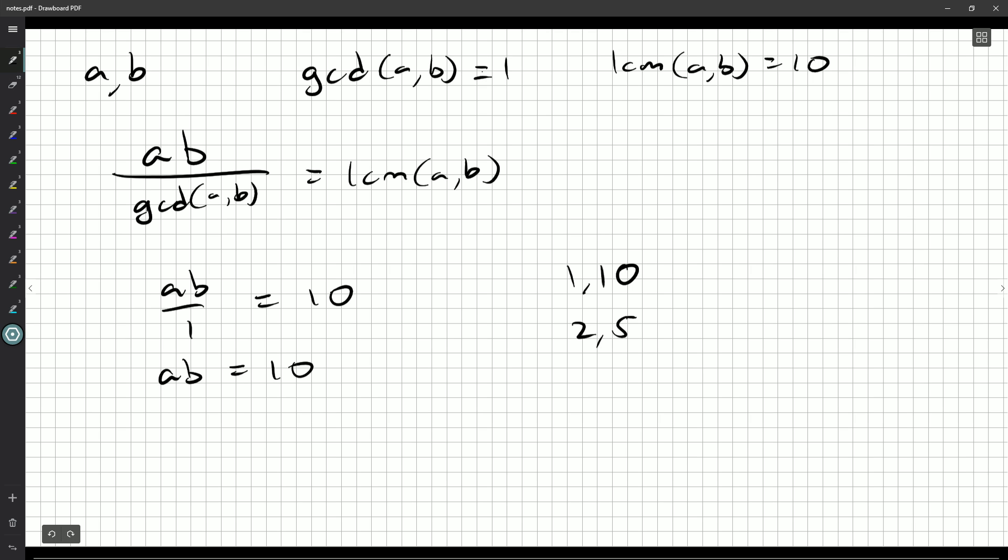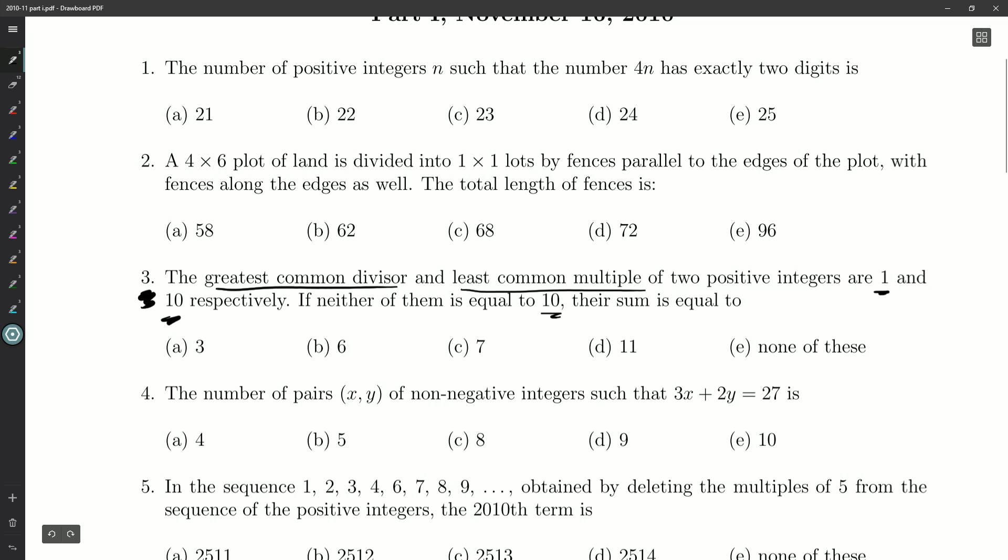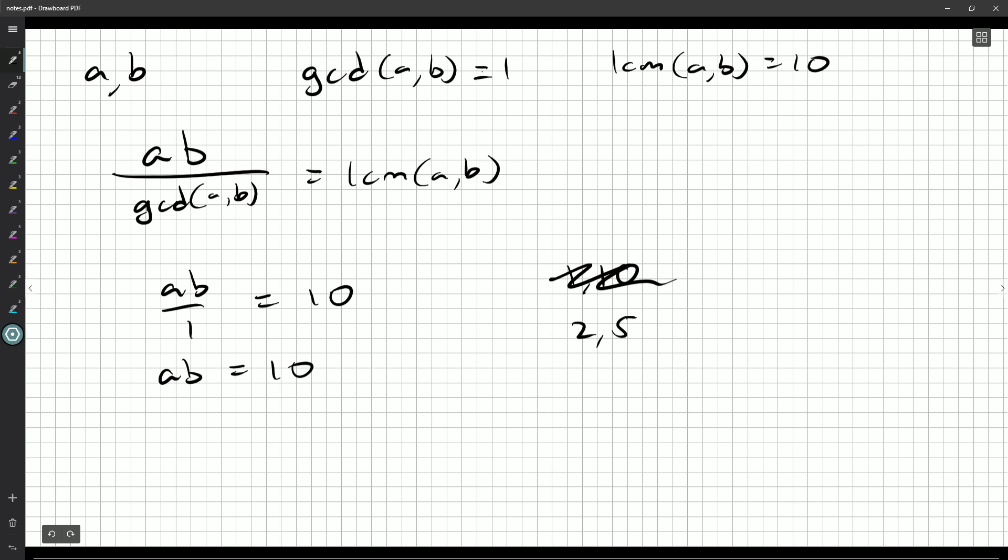Okay? So here, maybe A would be one and B is ten, or maybe A is two and B is five. But, neither of the numbers is equal to ten, so two, five is the only possibility, and the sum of those numbers is then seven.